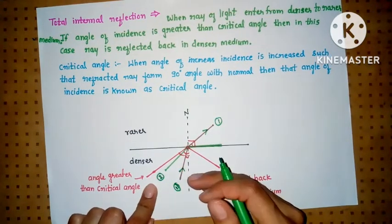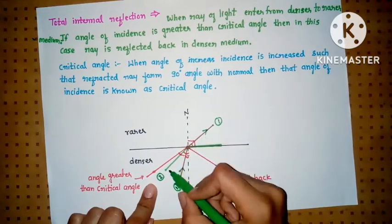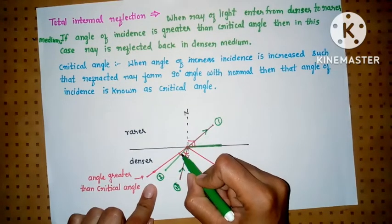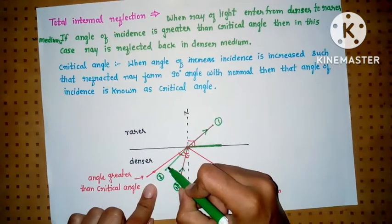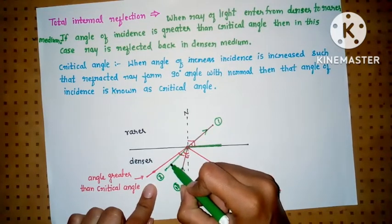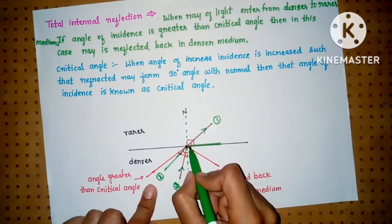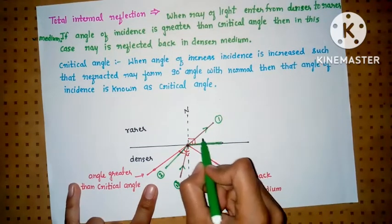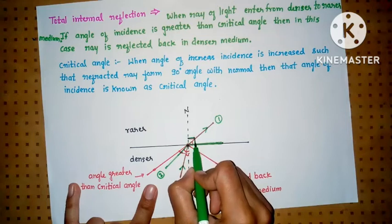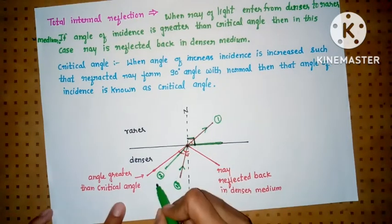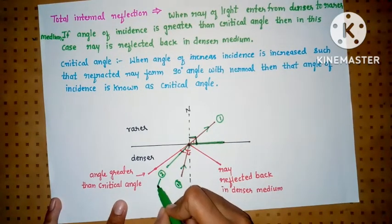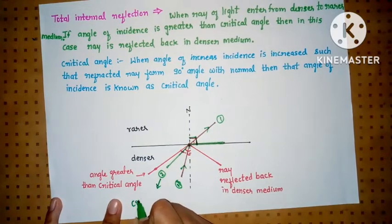So we see that at this angle of incidence, the reflected light forms a 90 degree angle with the normal. So this angle is known as critical angle.